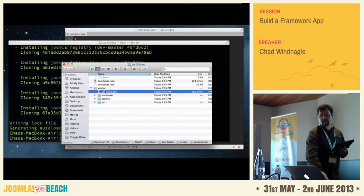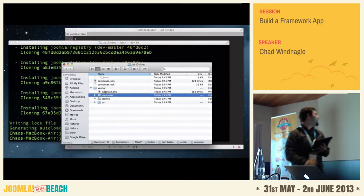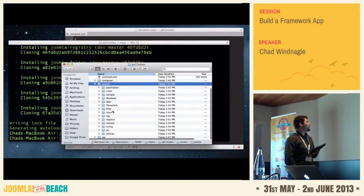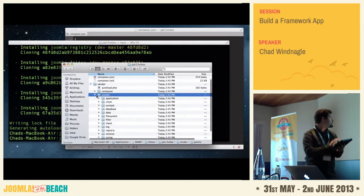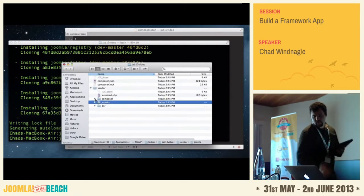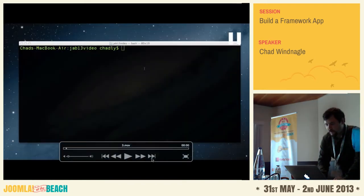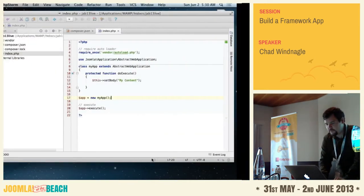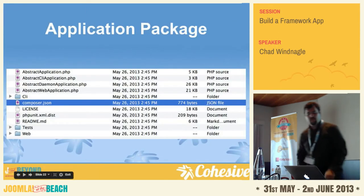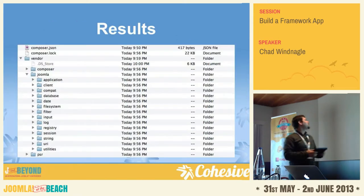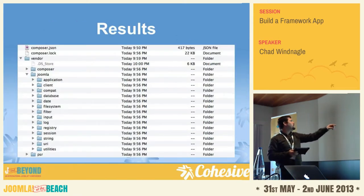There's an autoloader, and you can see all the files that came down. I only asked for one thing — I asked for application — but I got a lot more than that. So here's what I ended up with. That's the application package right here. It downloaded all of these files from my composer.json file.